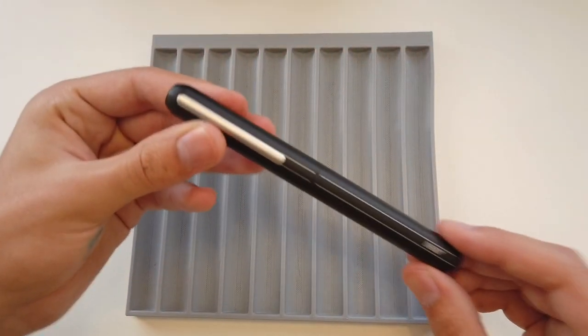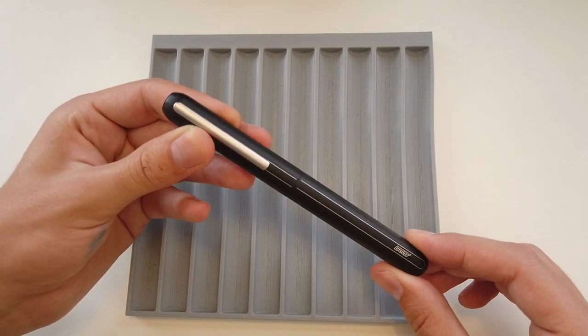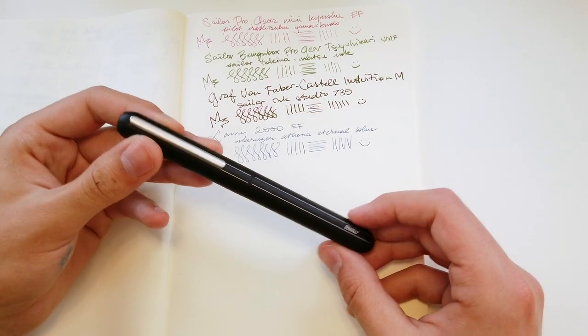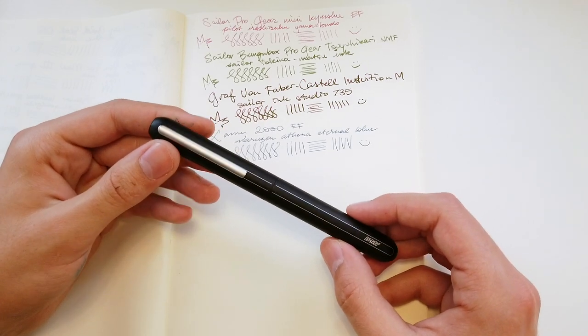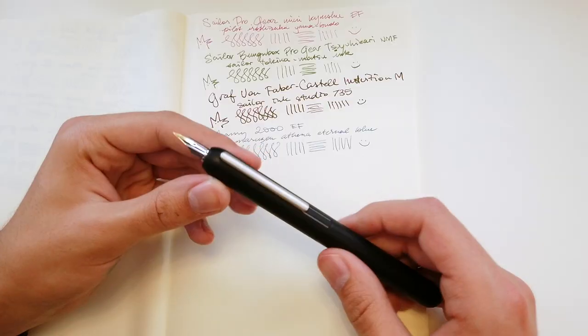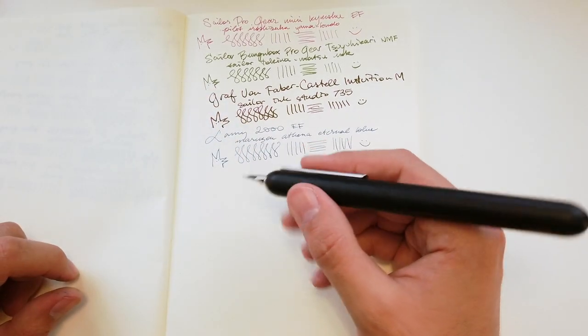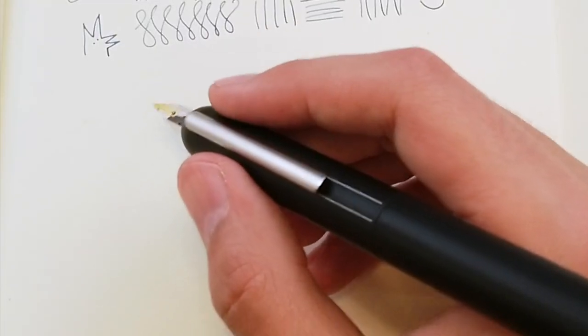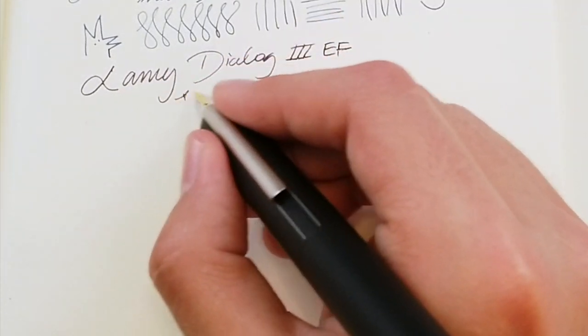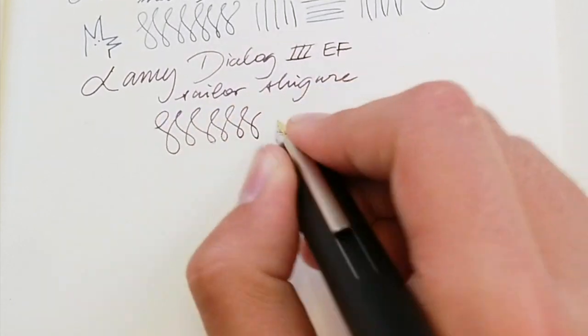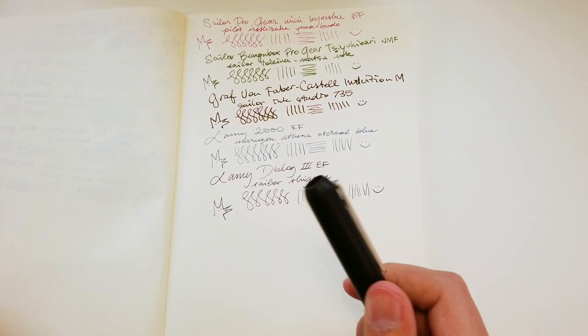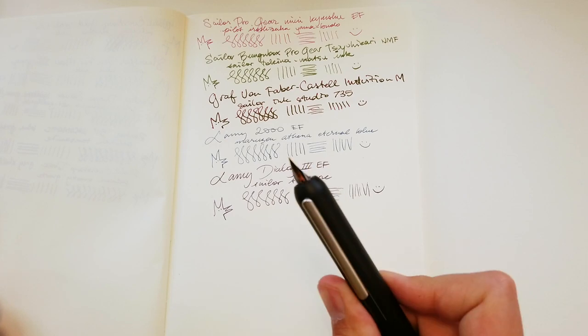And the Dialogue 3, another frequent guest of my videos and comparisons, because it's so cool. Last but certainly not least, a pen that needs no introduction. If you've watched my YouTube channel, I realize that I talk about it a lot because it's a cool pen. Dialogue 3 by Lamy, full-size, two-tone, extra-fine gold nib, big honkin' hotdog body, and a joy to use.